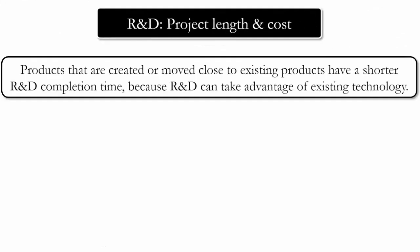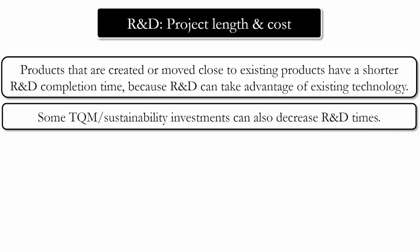Products that are created or moved close to existing products have a shorter R&D completion time, because your company already knows how to make those products and R&D can take advantage of existing technology. Total quality management activates in round four, and there are some investments you can make in TQM that decrease R&D times.